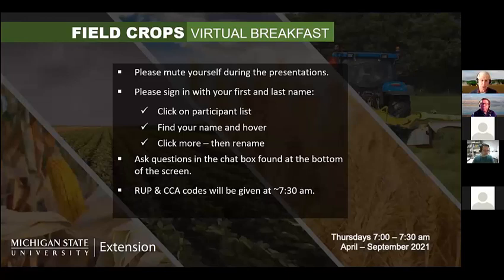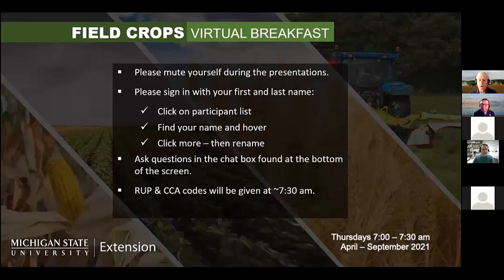In order to get your credits properly assigned, please sign in with your first and last name. Click on the participant list, find your name, hover over it, click 'More,' then 'Rename.' When you enter your name, please put it in all caps — that does help us. Please ask questions in the chat box at the bottom of the screen. There will be credits assigned to this, both CCA and RUP.